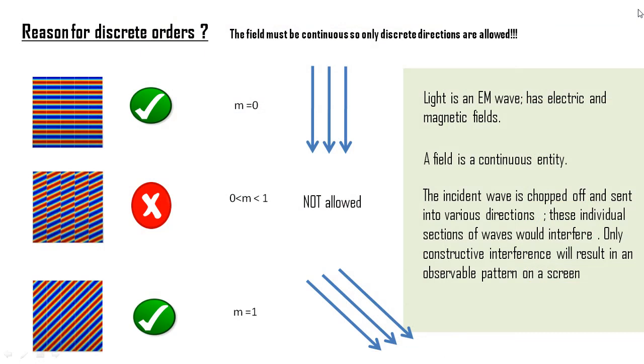We asked ourselves a question about why the diffraction pattern is discrete in nature and there are no continuous colors in it and there are regions of darkness and light. The reason can be understood as follows. Since light is an electromagnetic wave and is made up of things called fields. It is due to the varying defining properties of a field that we only see discrete orders.